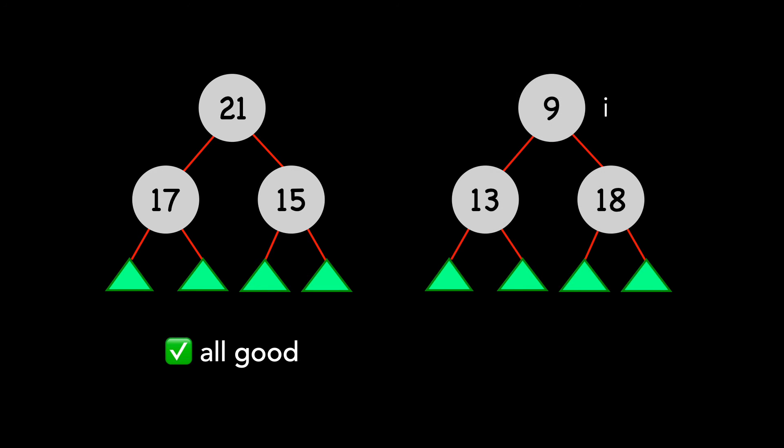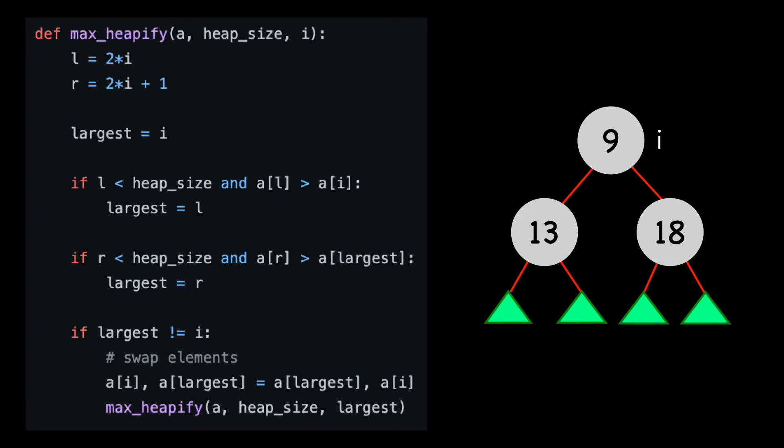On the right, we see that node i with a value of 9 is breaking the max heap property. Let's take a look at the max heapify code that will fix this.